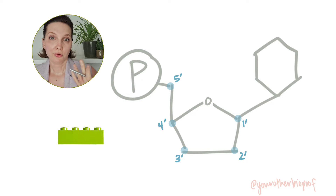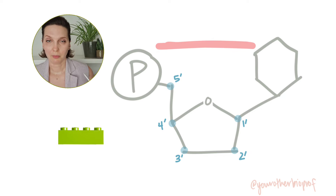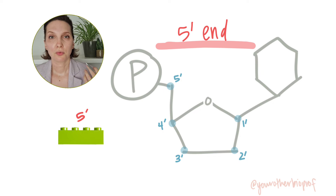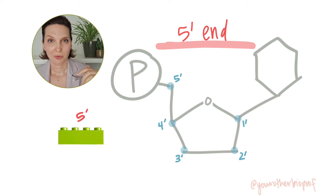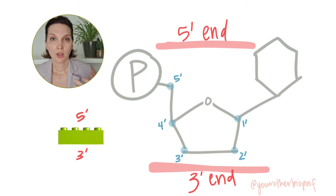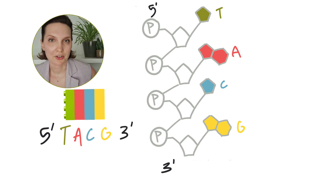So the side of the nucleotide closest to the five prime carbon, up by the phosphate end, is the five prime end. And the three prime end is the side down by the three prime carbon, where the flat part of the sugar is — the sort of sugar butt part. So now the cell knows how to read our sequence; we have a sense of directionality.